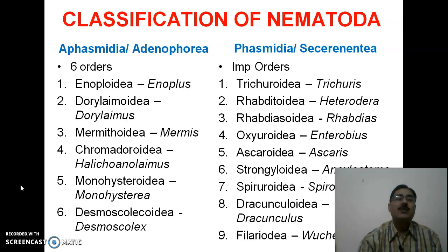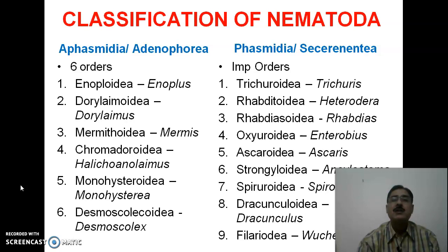Aphasmidia has 6 important orders: Enoploidia, Dorylaimoidia, Mermithoidia, Chromadoroidia, Monhysteroidia, and Desmoscolecoidia. Phasmidia has more than 10 important orders, with 9 shown here: Trichuroidia, Rhabditoidia, Rhabdiasoidia, Oxyuroidia, Ascaroidia, Strongyloidia, Spiruroidia, Dracunculoidia, and Filaroidia.